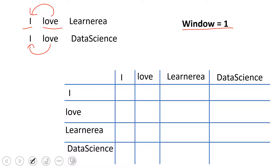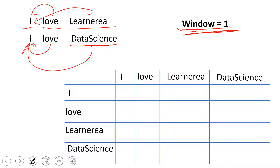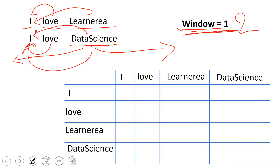In the second sentence, 'love' is appearing with 'I', and in the first sentence also 'love' is appearing with 'I'. Now keeping the window equal to one, if you try to figure out how many times 'learn' or 'data science' appears with the word 'I', the answer will be zero. But if you increase the window size to two, it will look two words backward and two words forward to find neighbors, so 'data science' would appear with 'I' once.